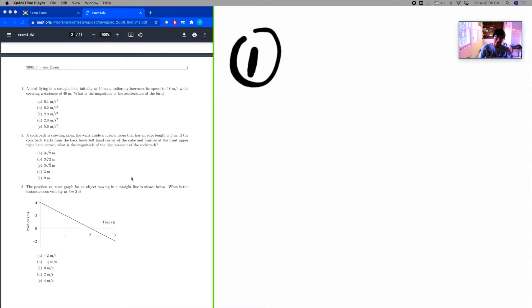What's the magnitude of the acceleration of the bird? So, final speed is 18, initial is 10 and covers a distance of 40 meters. So I can't use that. What I can use is VF squared is equal to VI squared plus 2.